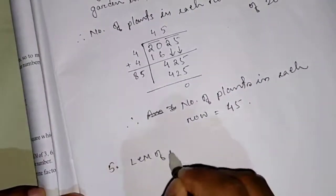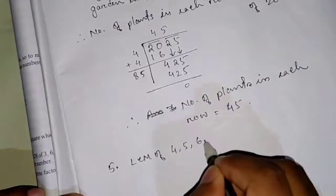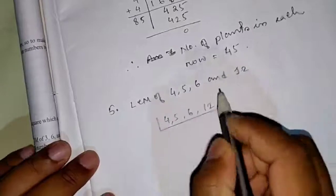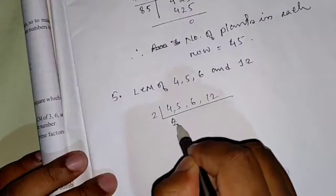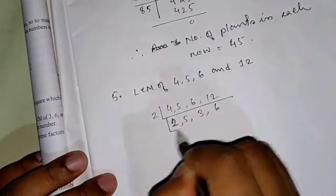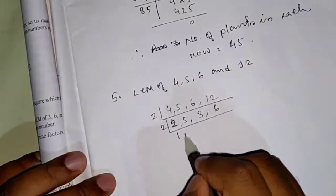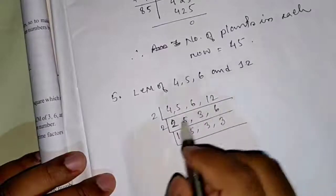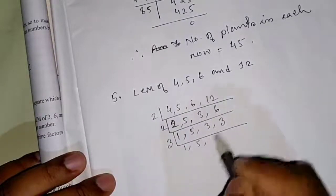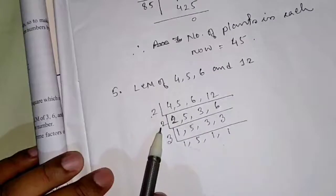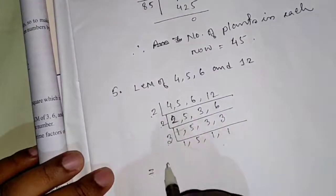LCM of 4, 5, 6 and 12: dividing by 2 gives 2, 5, 3, 6; dividing by 2 again gives 1, 5, 3, 3; dividing by 3 gives 1, 5, 1, 1. Therefore LCM = 2×2×3×5 = 60.